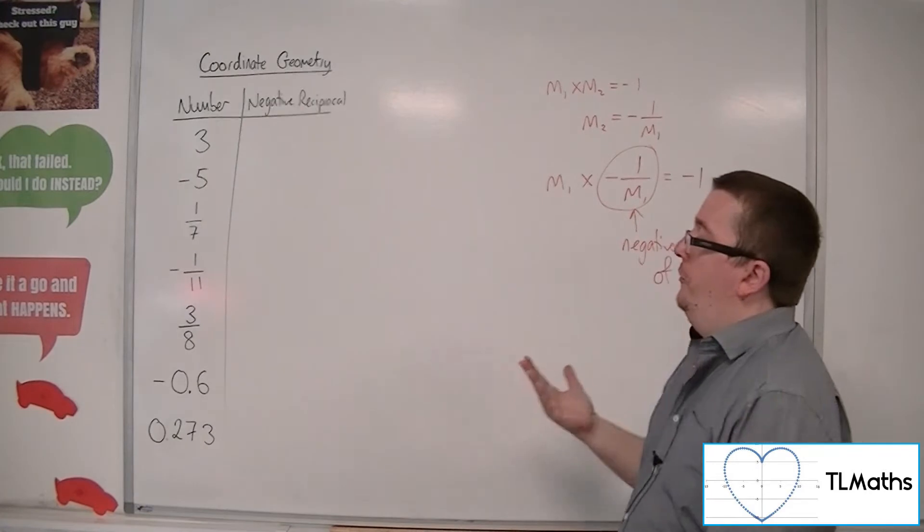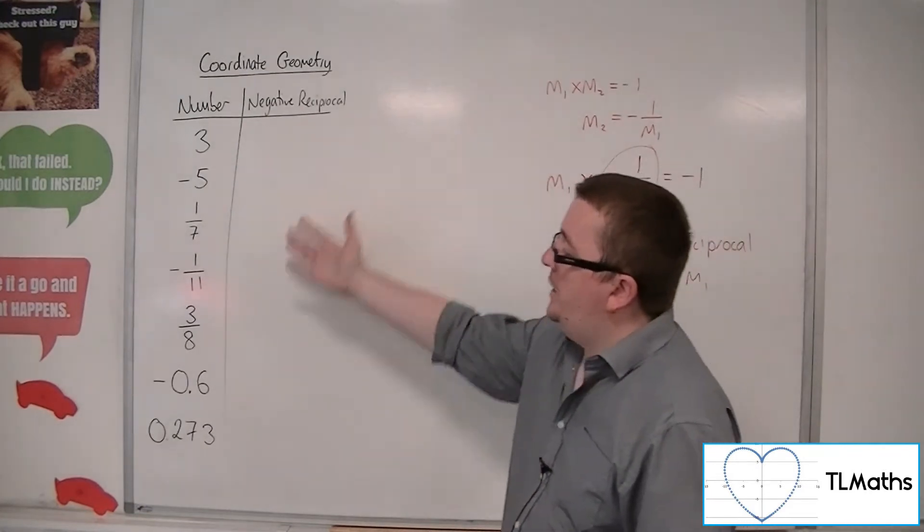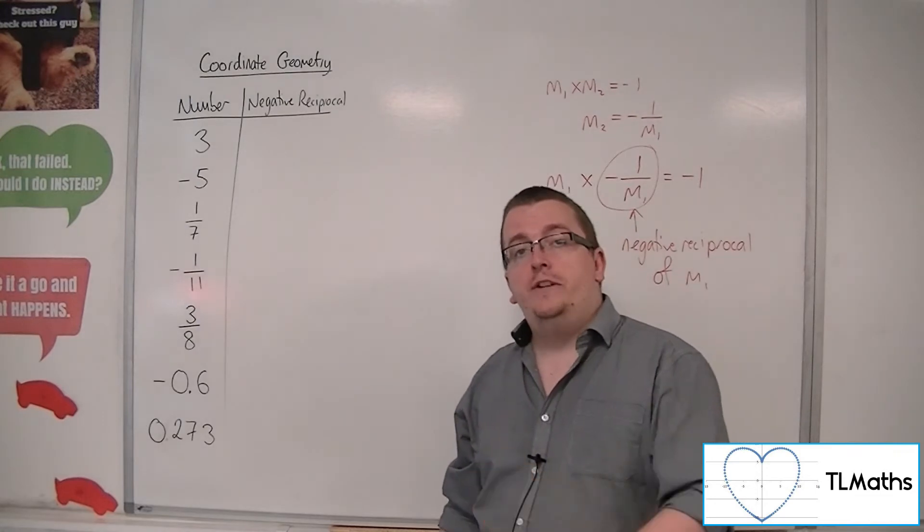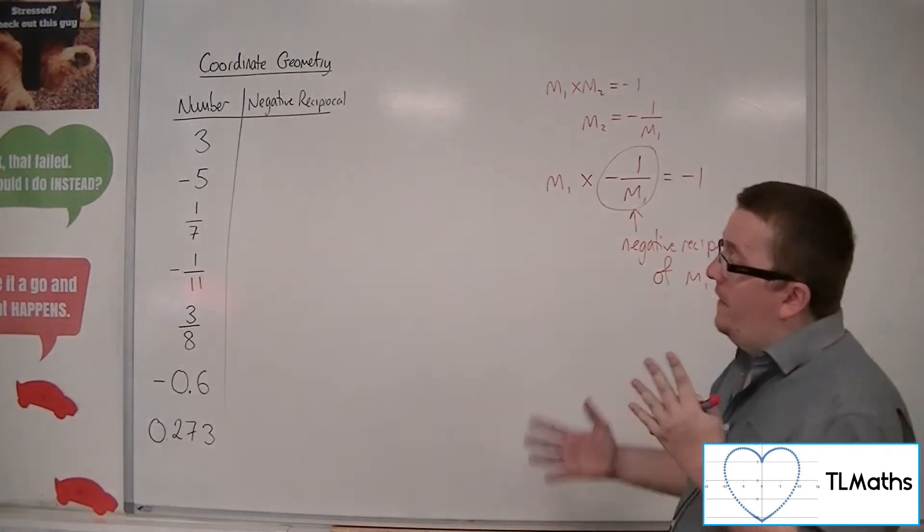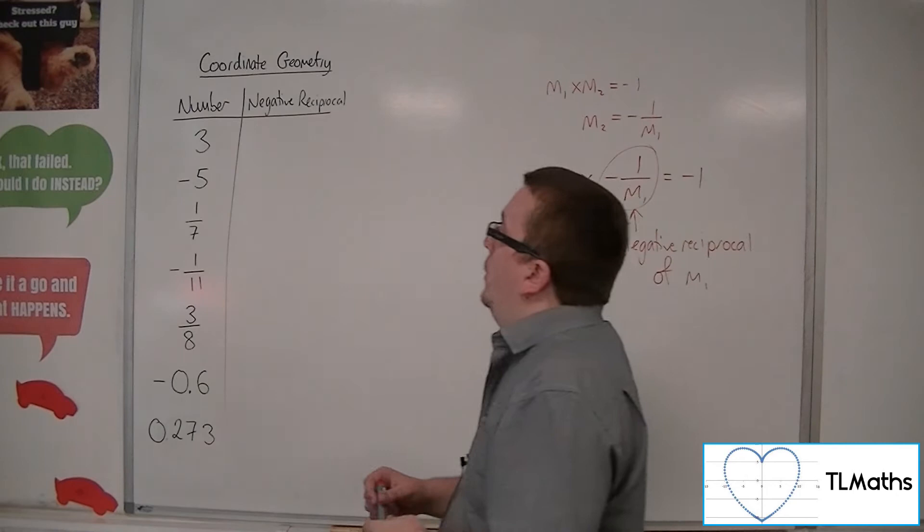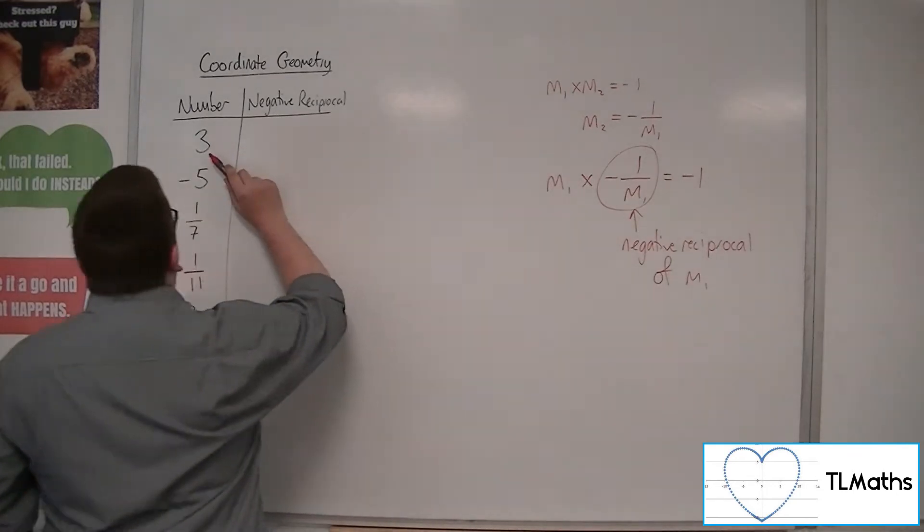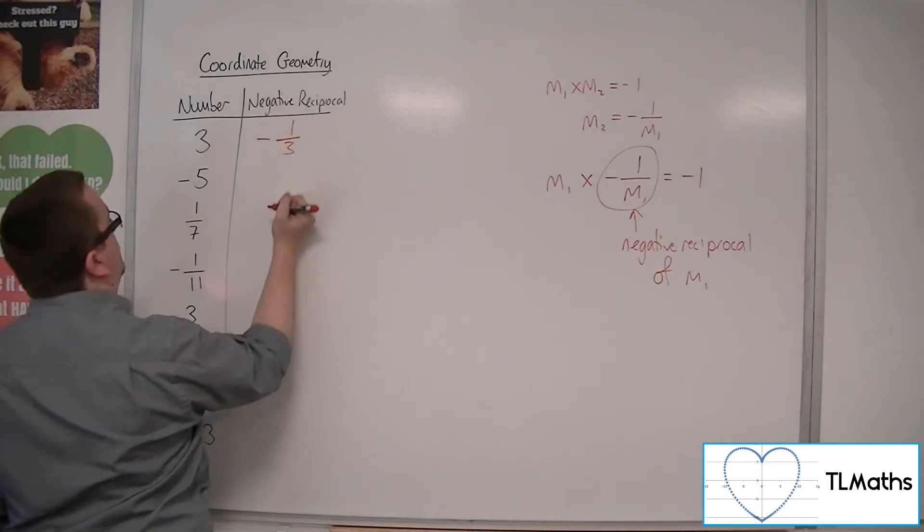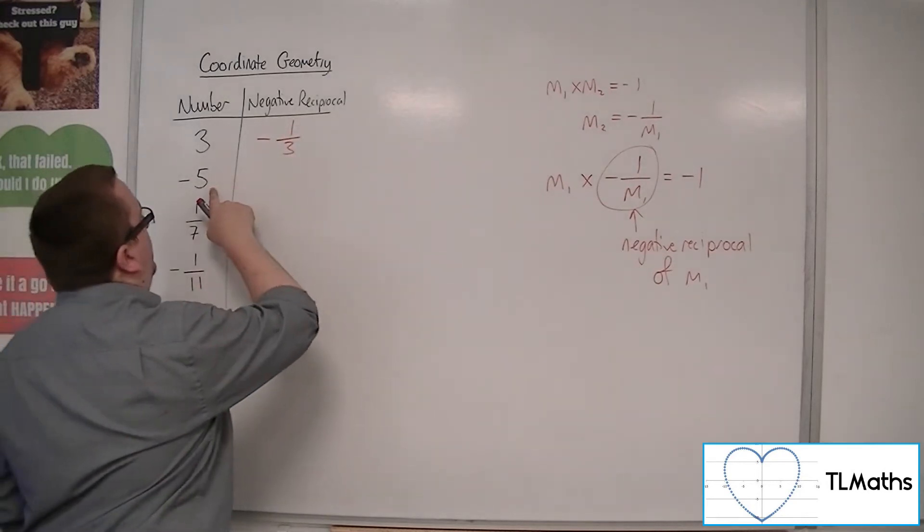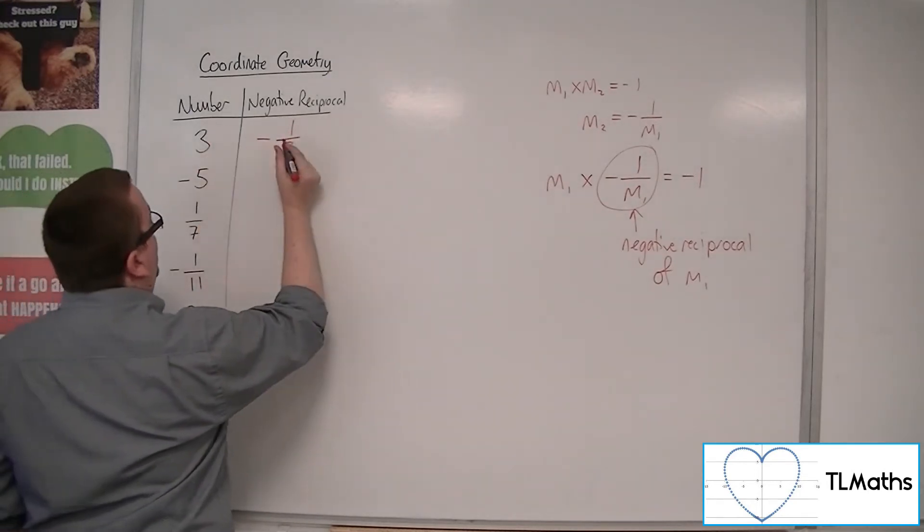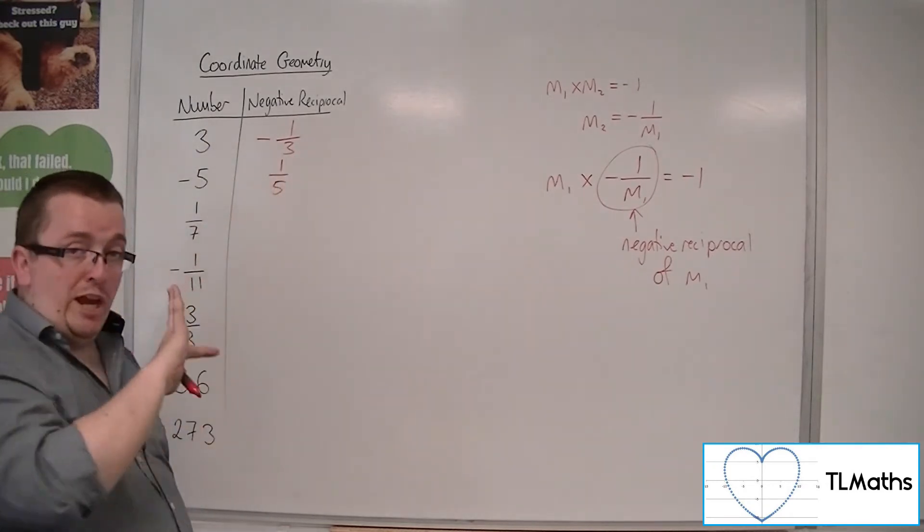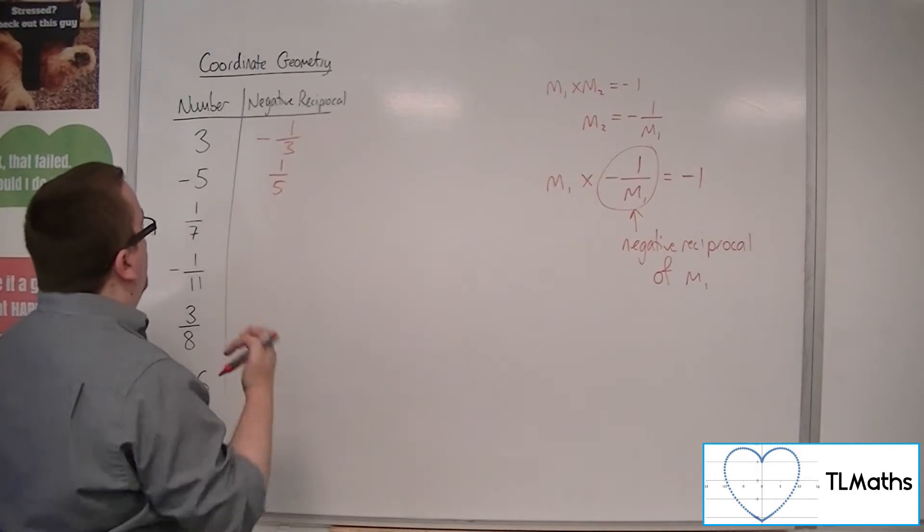So if I wanted to find the negative reciprocal of each of these numbers, then what I know is I need to change the sign and do 1 over that number. So 3, the negative reciprocal of 3, would be minus 1 over 3. Minus 5 would be positive 1 over 5. So notice how I have to change the sign and then 1 over that value.